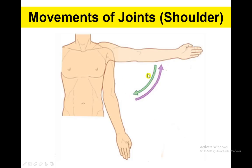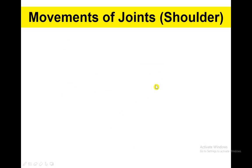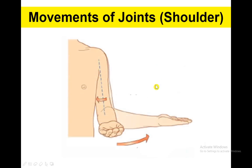Here we can see from the front view abduction and adduction very clearly. By bending the elbow joint it will be very clearly visualized. Moving inward and outward, we call that internal and external rotation of the shoulder joint.